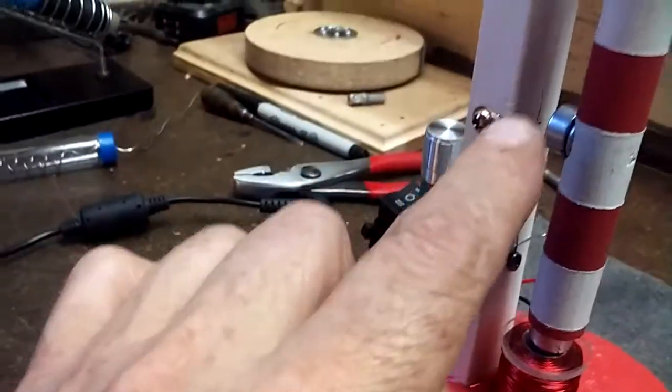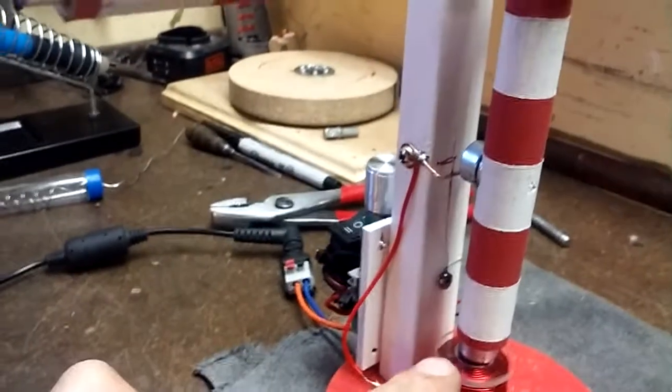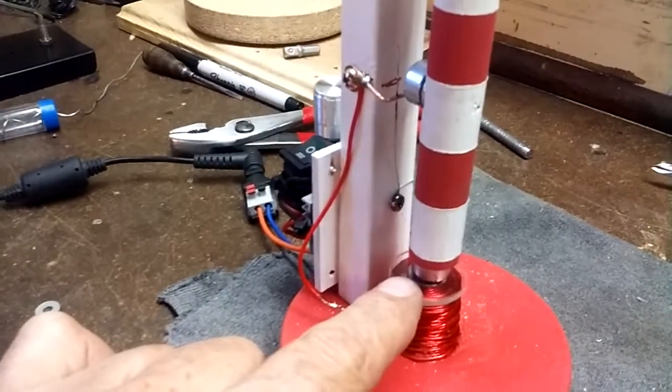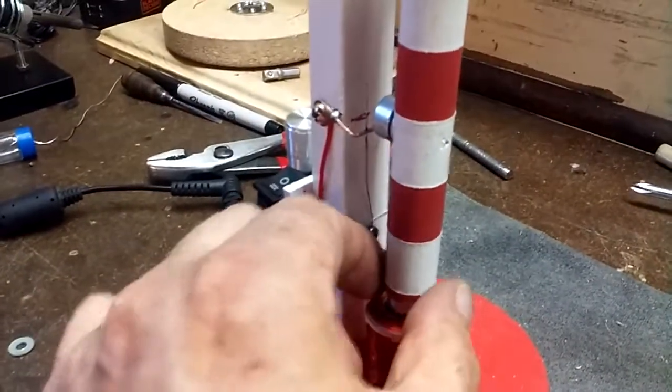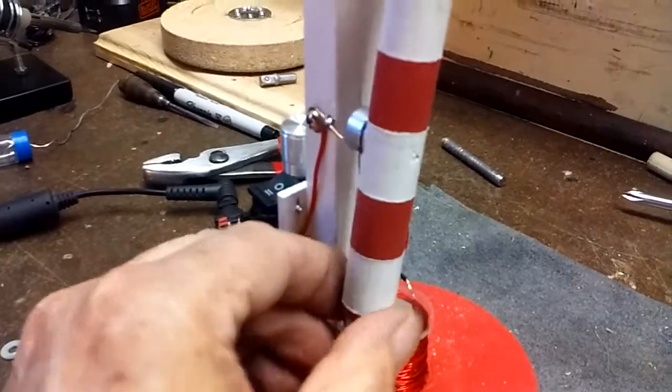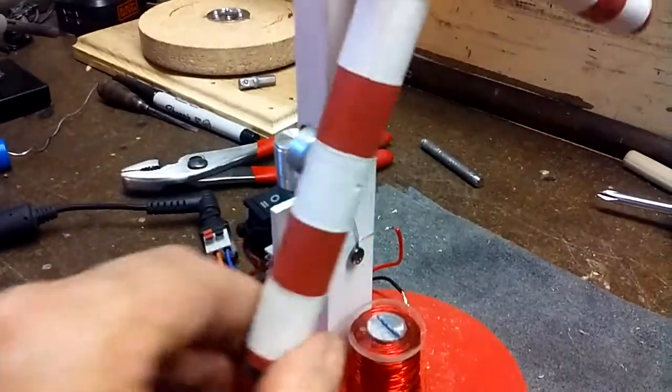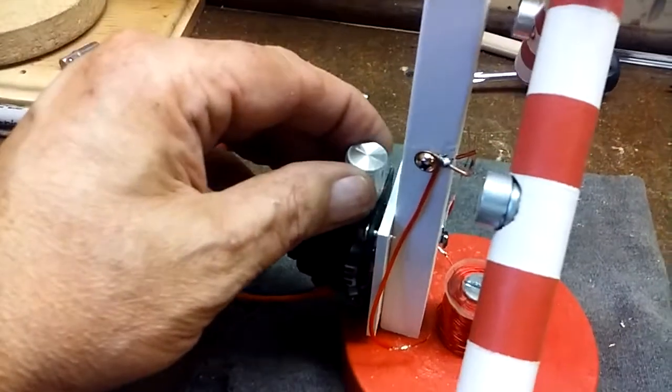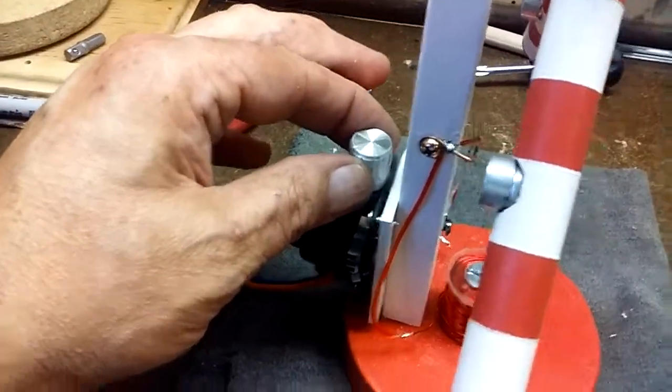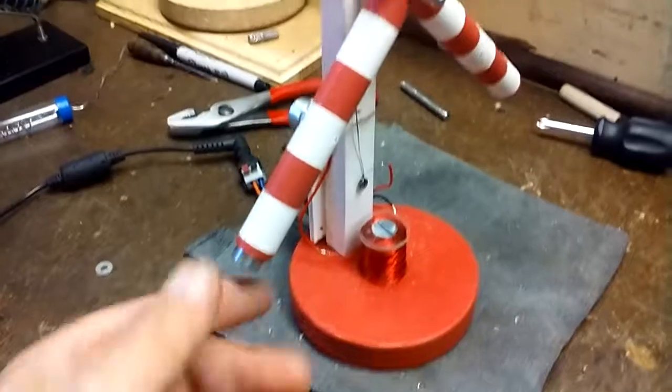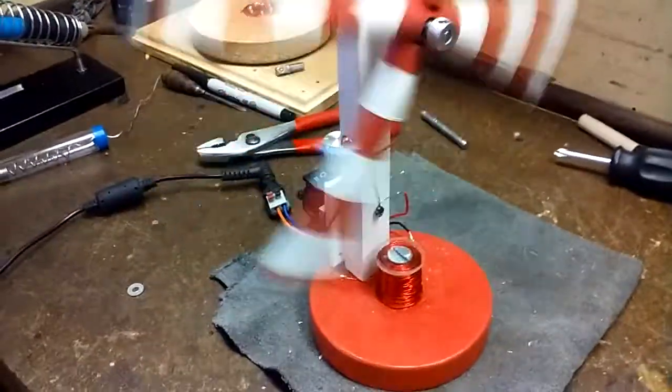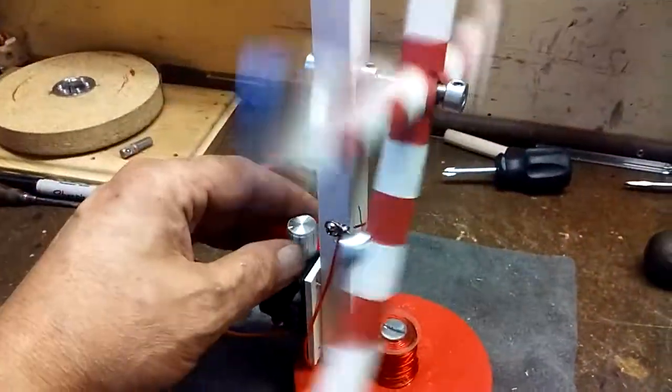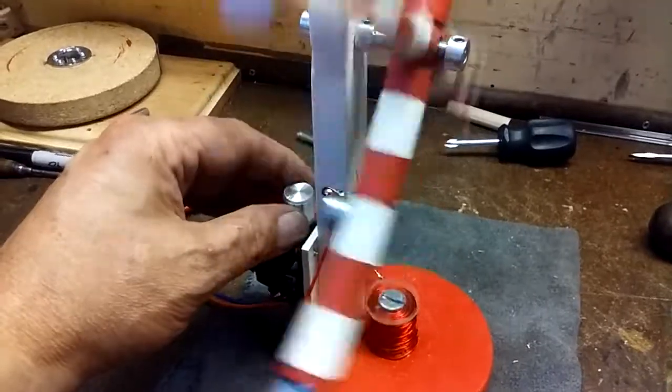When this is triggered it turns on the coil. South pole pushes away the north pole. Potentiometer back here for adjusting the speed. And away it goes.